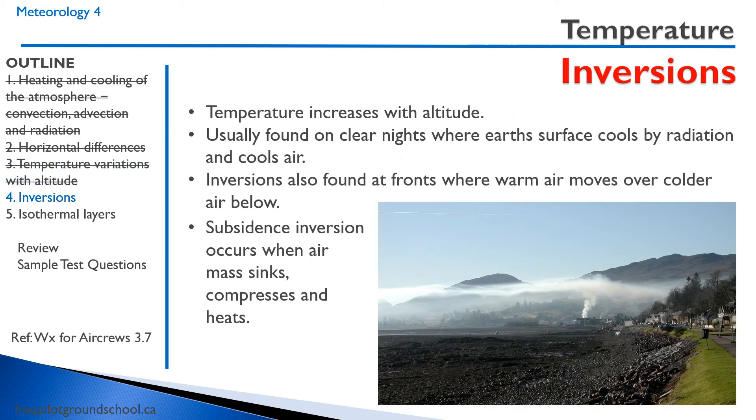Sometimes, however, we have something called inversions. Inversions are when the temperature increases with altitude. This is often found on clear nights where the earth's surface cools by radiation and cools the air immediately above the earth. We also find sometimes this radiation fog in areas where there are temperature inversions. Inversions are also found on fronts where warm air moves over colder air below. A subsidence inversion occurs when the air mass sinks, compresses, and then heats.